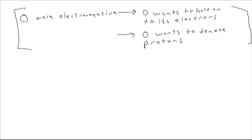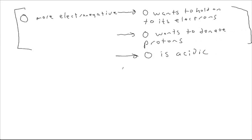Since oxygen wants to hold on to its electrons, it must want to donate any protons it has. Would that make it more or less basic? Less basic — it would make it acidic, not basic. Acidic is the opposite of basic. You could add another thought step: 'oxygen is acidic, which means oxygen is less basic.' That's how you analyze this using the proton definition. There are even more thought steps there, so it helps even more to write them down. It's simpler to focus on the electron definition, but that's how we think about the proton definition.